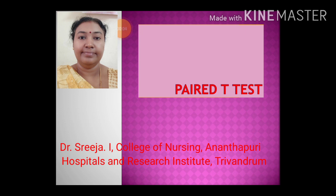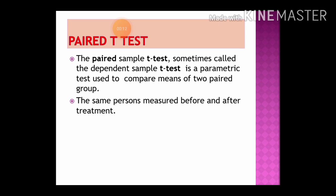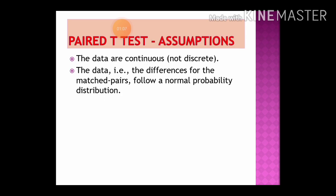Today let us discuss the paired t-test and how to calculate it. A paired sample t-test, sometimes called the dependent sample t-test, is a parametric test used to compare the means of two paired groups — the same persons measured before and after treatment. For example, if you have given an intervention, you compare the before and after scores to know whether there was any significant change due to the intervention. We use the paired t-test to find out whether the intervention was effective by comparing the difference in scores after the intervention on a particular variable.